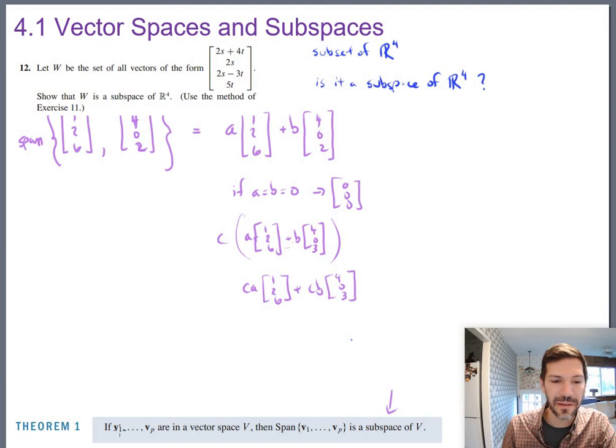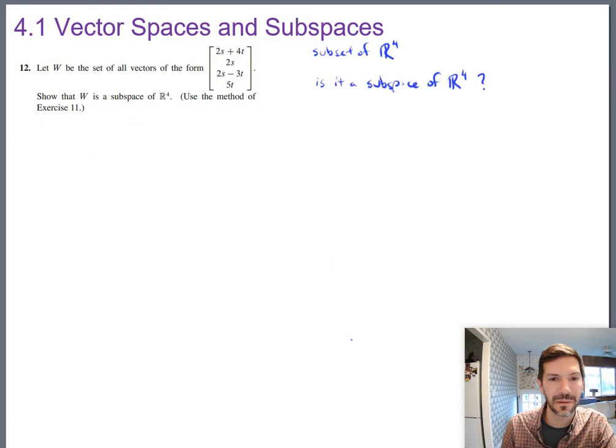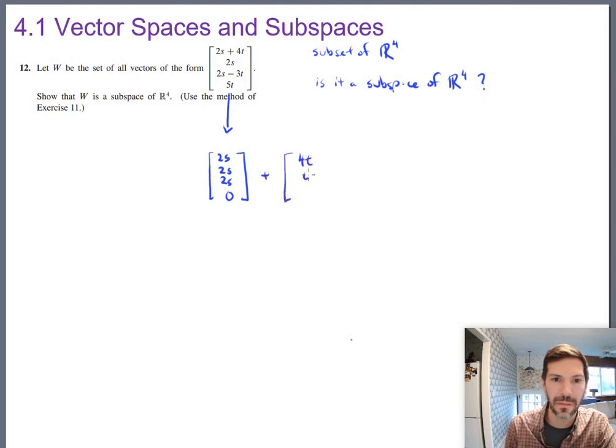Remember theorem one? It said if you've got some vectors, V1, V2, Vp, whatever, that are from a vector space, then the span is indeed a subspace. How does that help? If I can show that number 12, if that's a span of some vectors from R⁴, then automatically subspace. So let me rewrite what I've got here. I'm going to break it apart into the s's and the t's. So that's still equivalent. That's still the same set of vectors. And of course, I'm going to factor an s and a t.